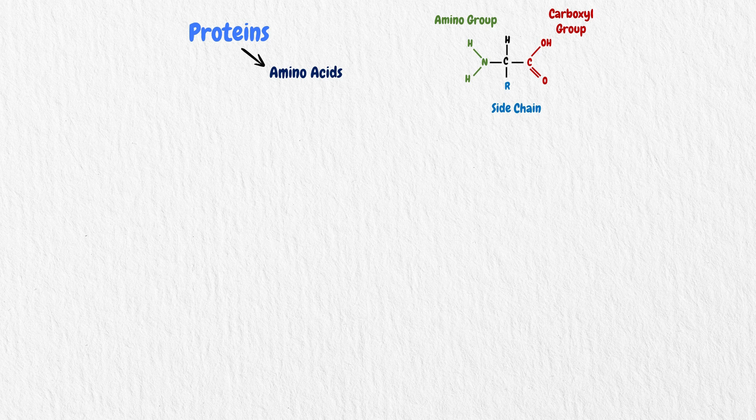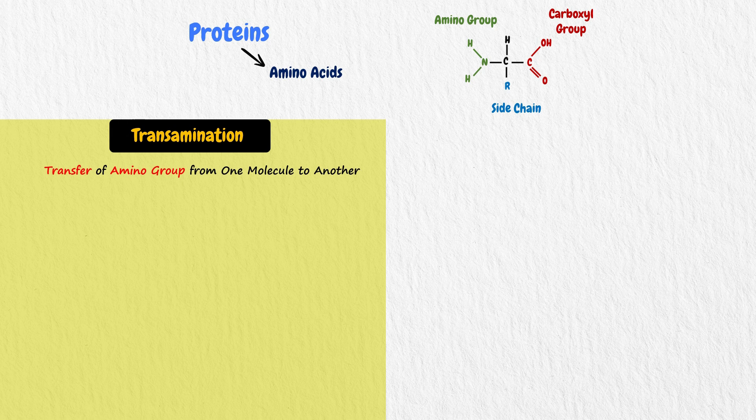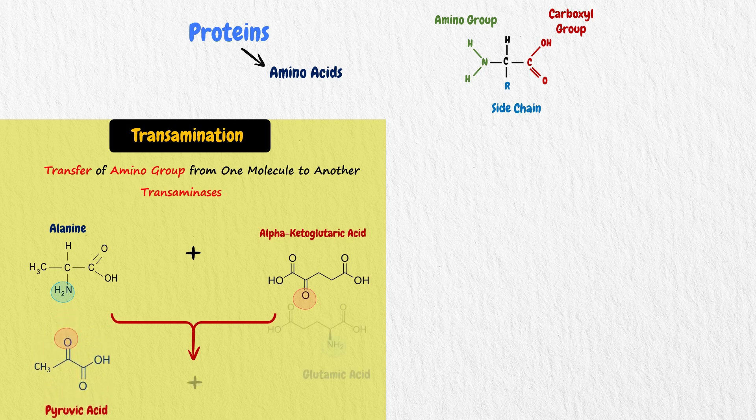What is transamination and deamination? Transamination refers to the transfer of an amino group from one molecule to another. These reactions are catalyzed by enzymes called transaminases. A specific example is the transamination of alanine to make pyruvic acid and glutamic acid.